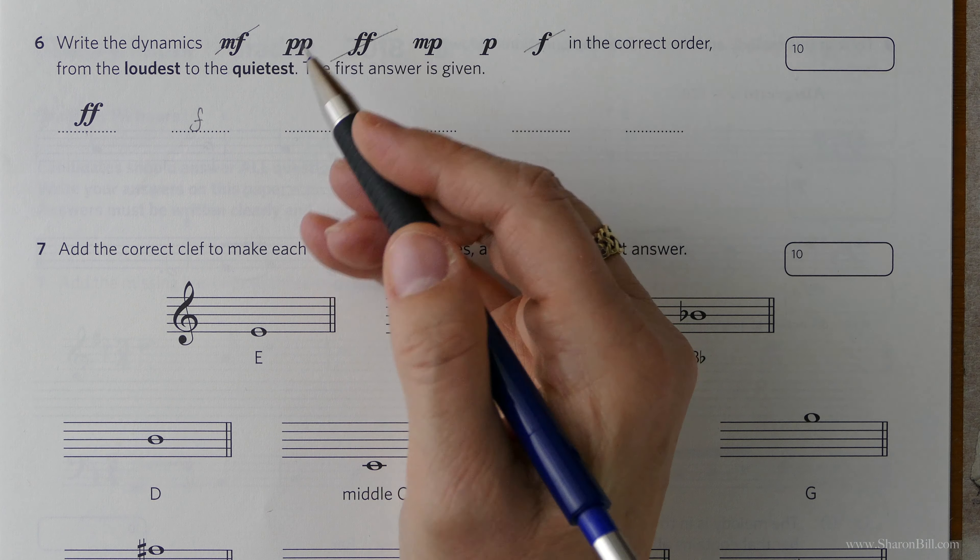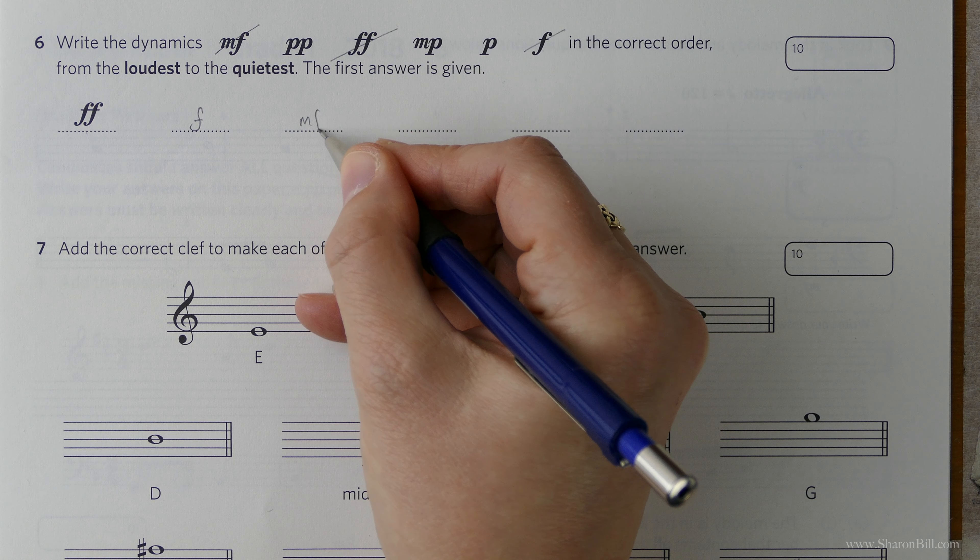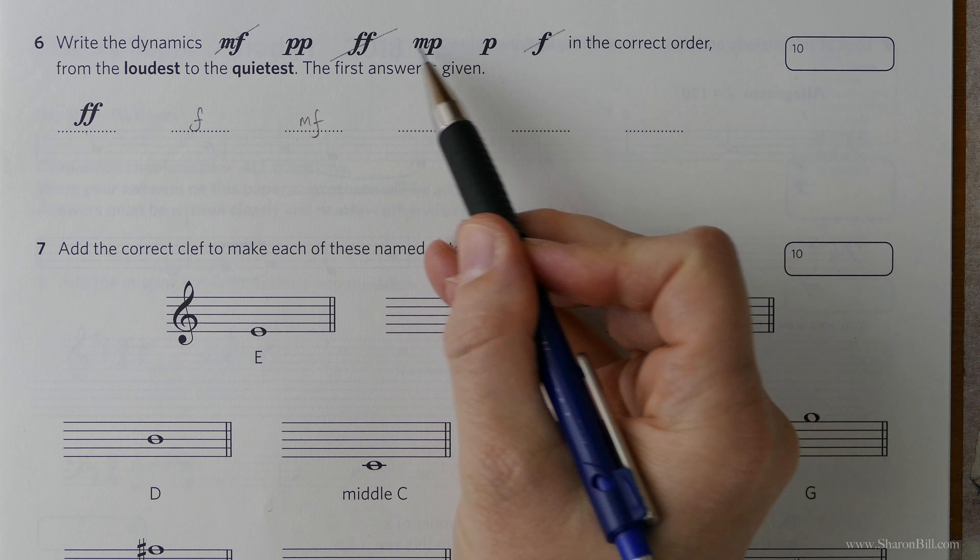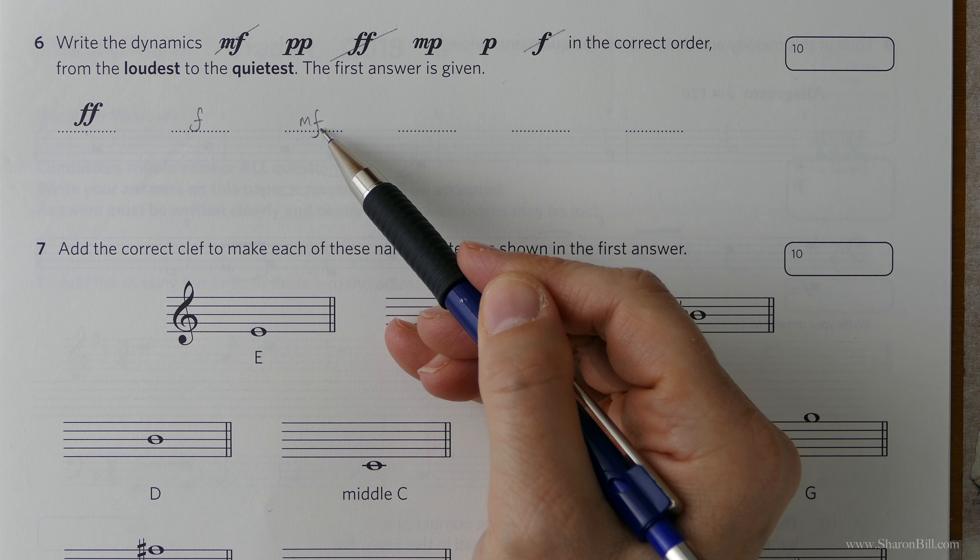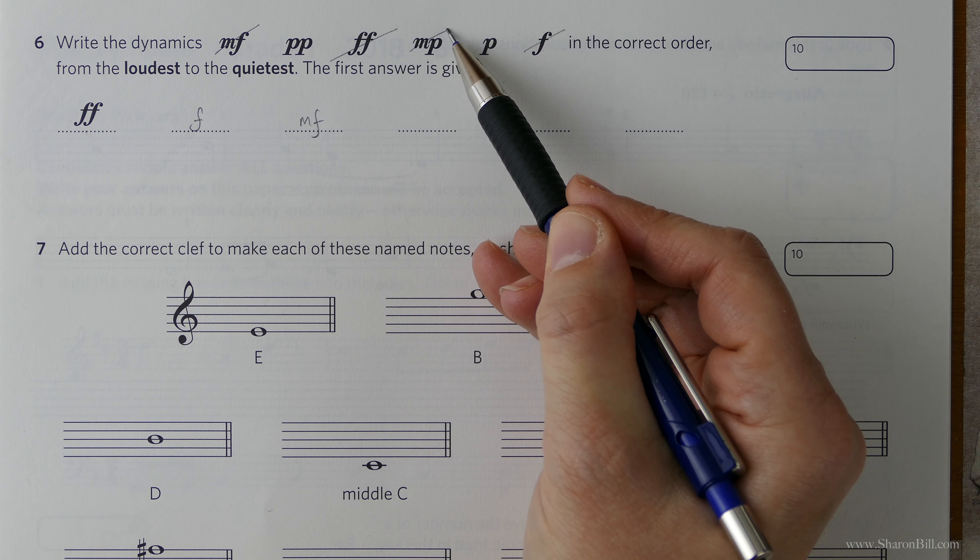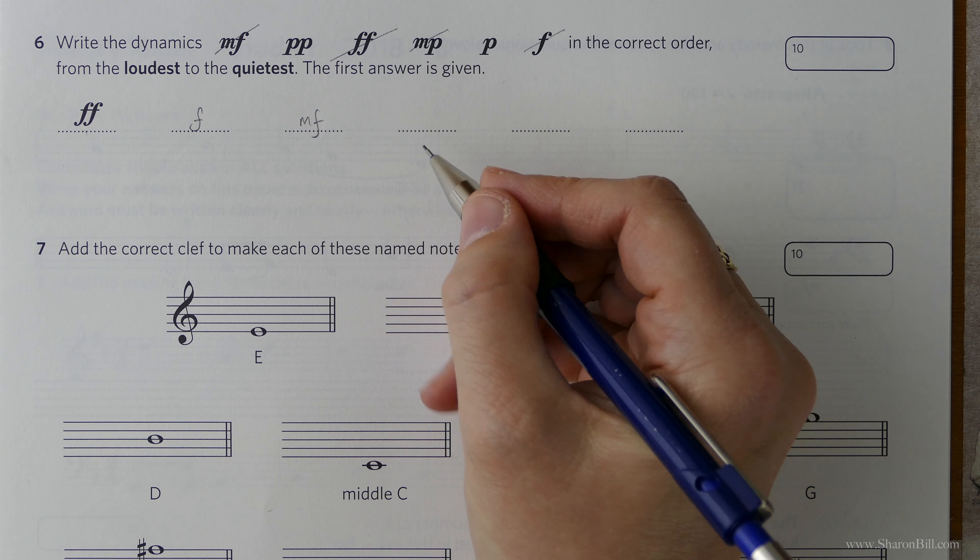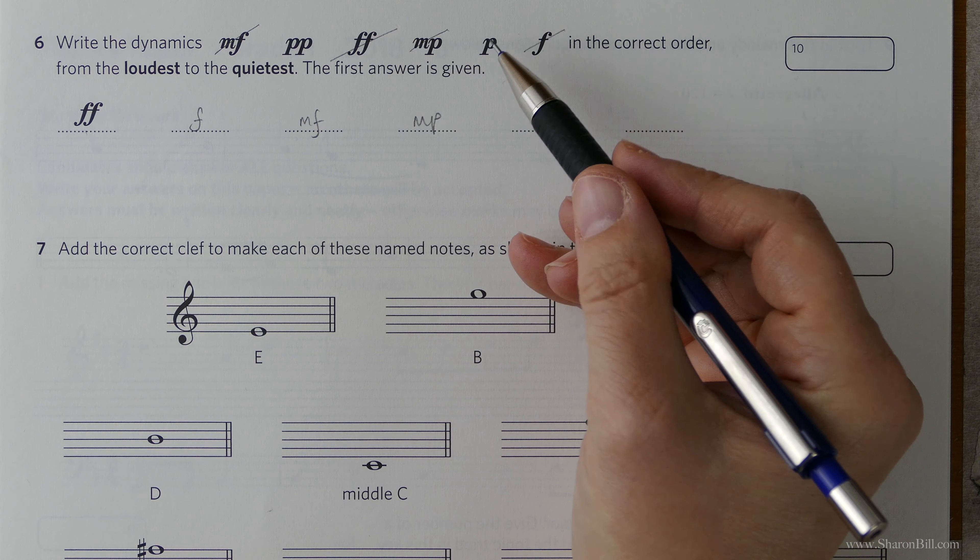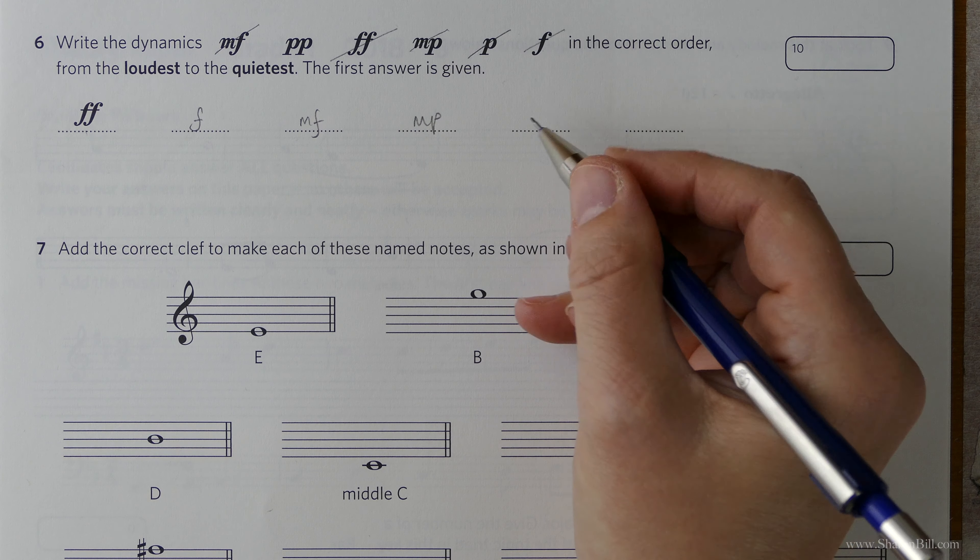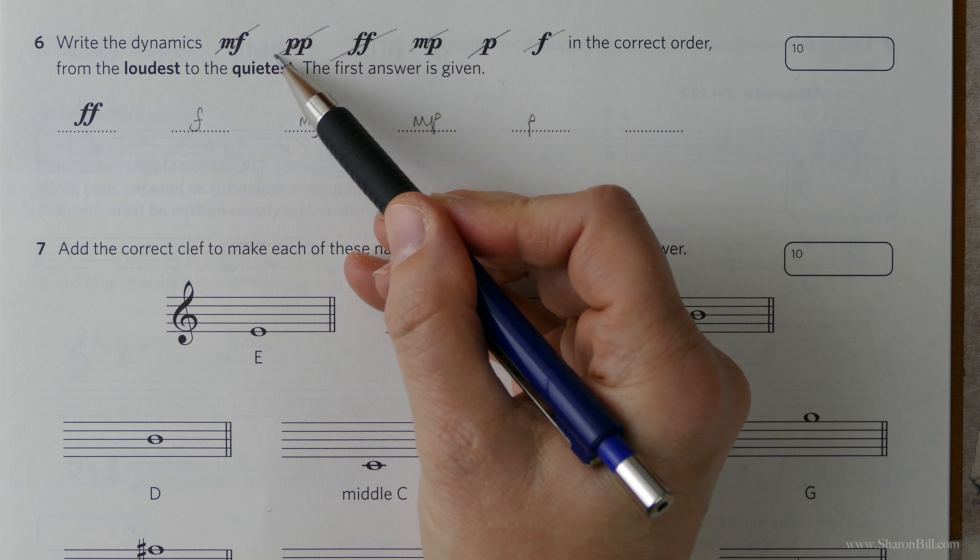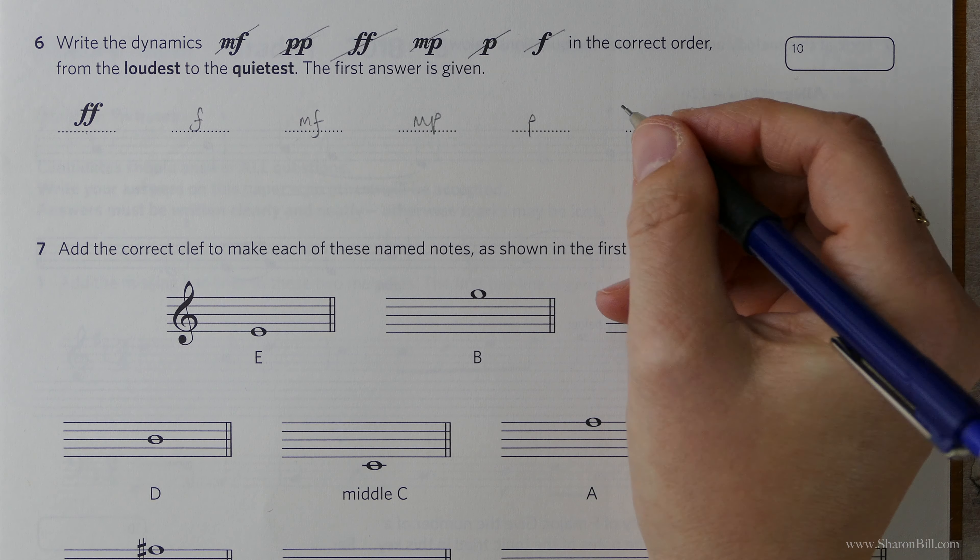Now then, mezzo forte is moderately loud, so we can see we're stepping down. We've gone very loud, loud, now just moderately loud, mezzo forte. And so now we're on to the quiet dynamics. So after mezzo forte, mezzo piano, sort of only moderately quiet now, is the next one down, and then just plain old piano, quiet there, and finishing with pianissimo which is extra quiet or very quiet.